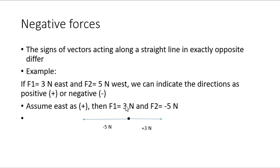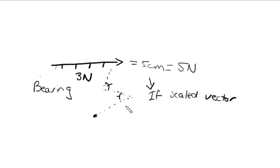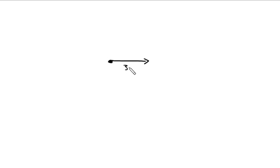What happens if we get negative forces? The signs of vectors acting along a straight line in exactly opposite directions differ. For example, if F1 is going 3 newtons east and F2 is going 5 newtons west, we can indicate the directions as either positive or negative. We need to pick a direction. In most questions, they'd like you to pick east as positive.